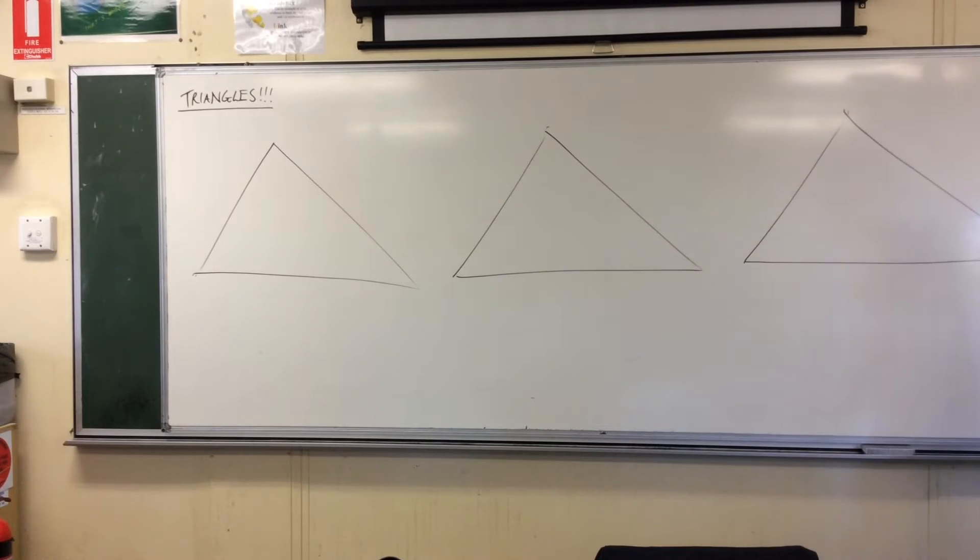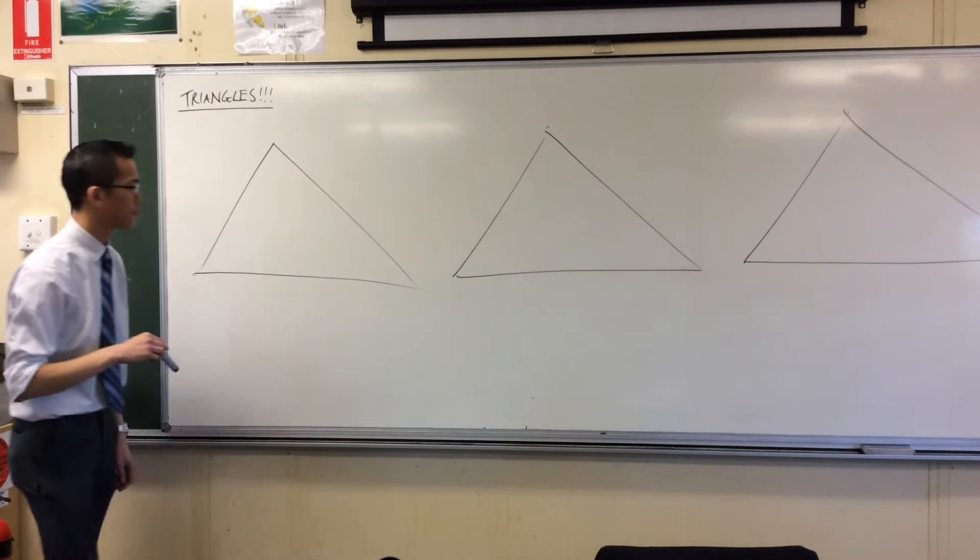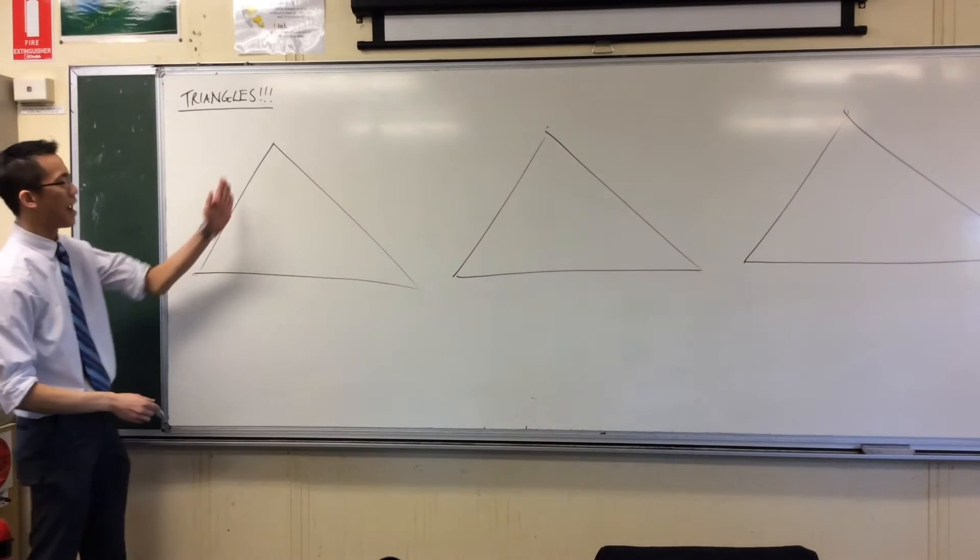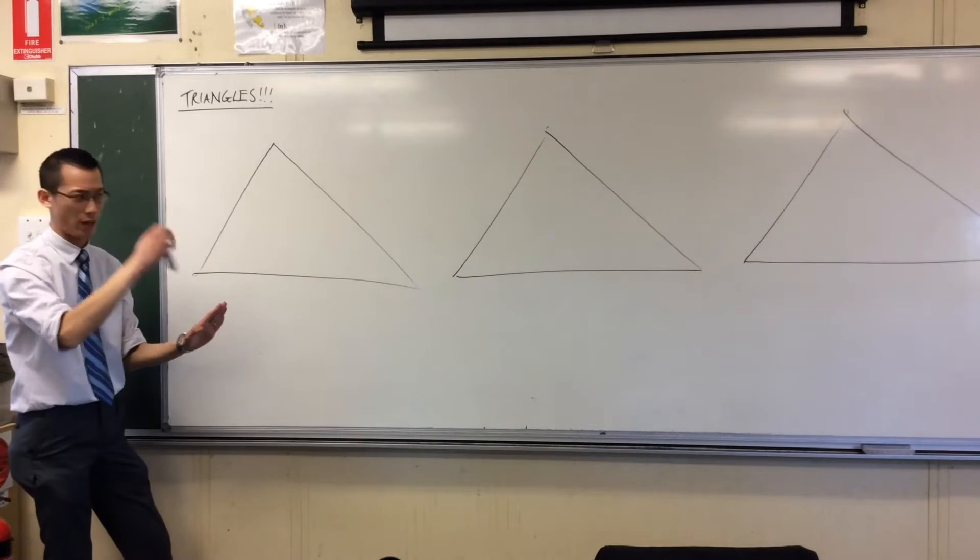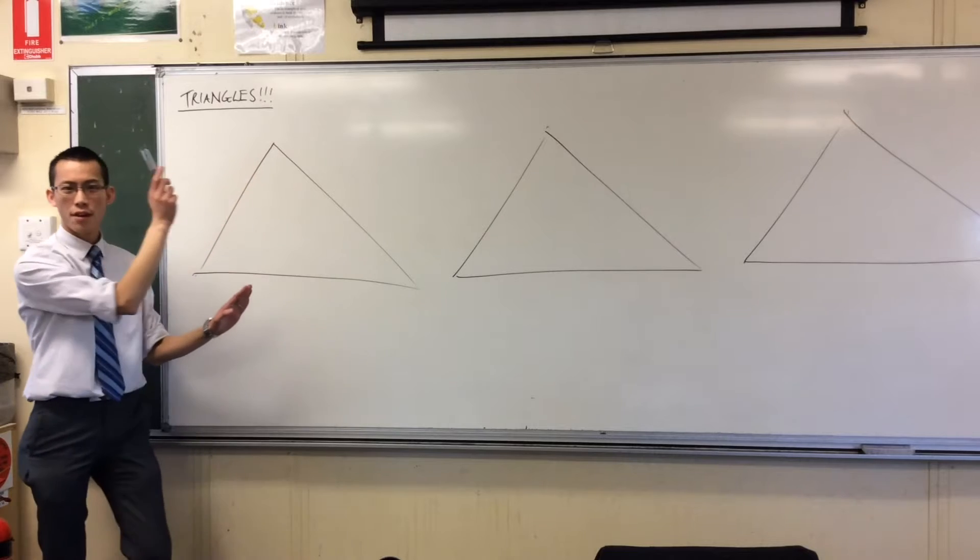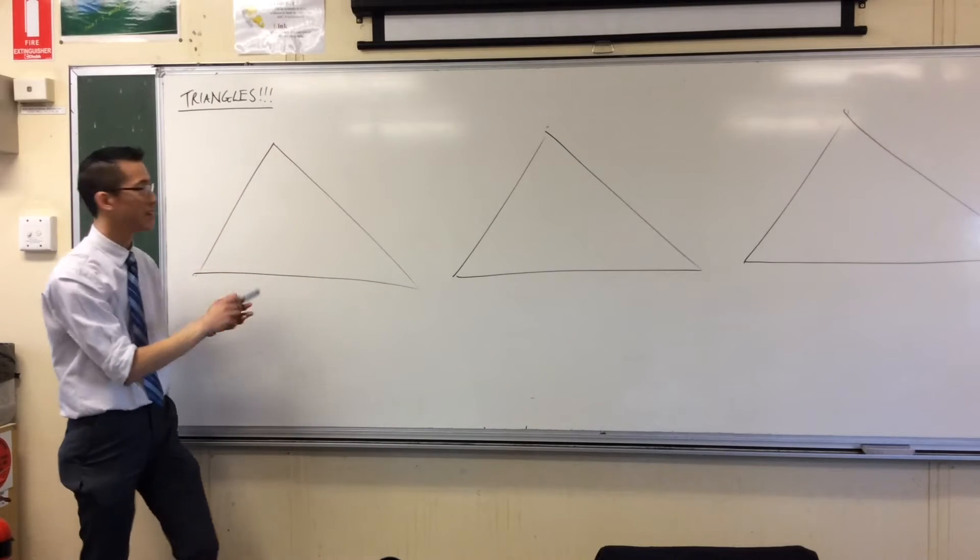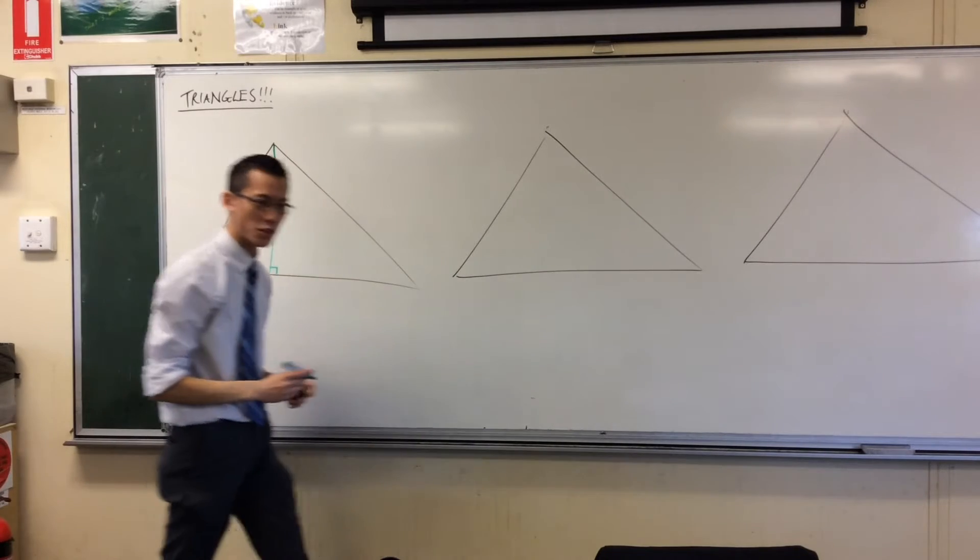So first important one, you start with a triangle. If you form the lines that are perpendicular to any side that intersect with the vertex that's opposite that side, you get a line like this.